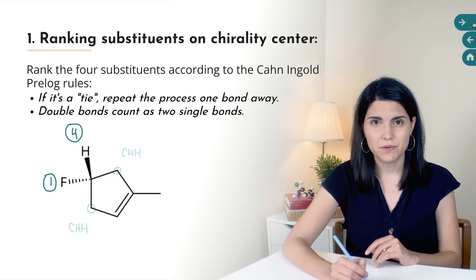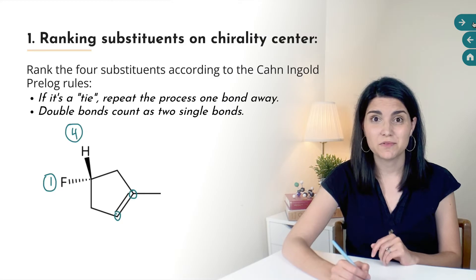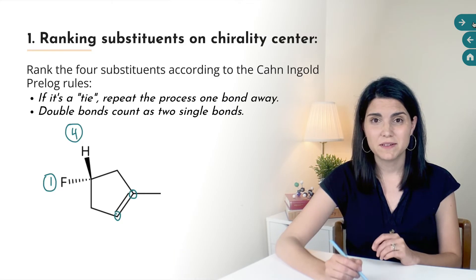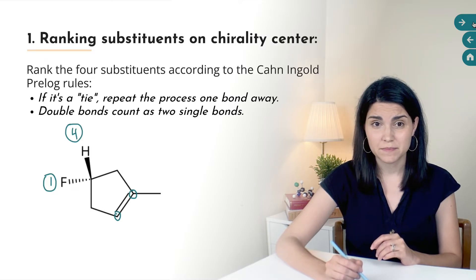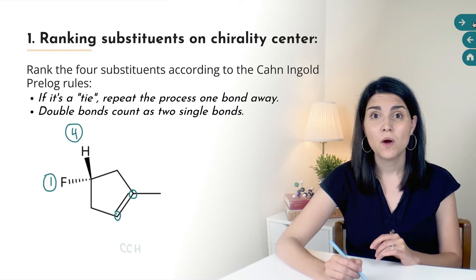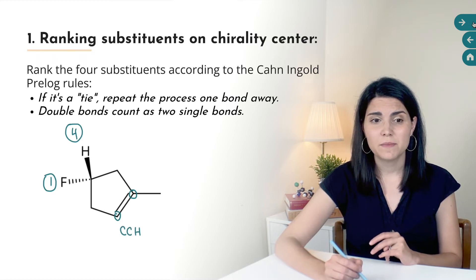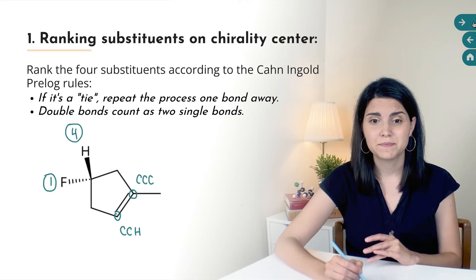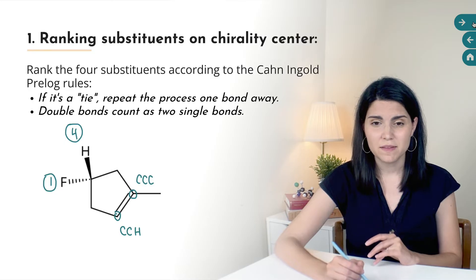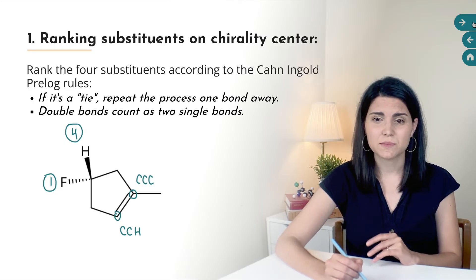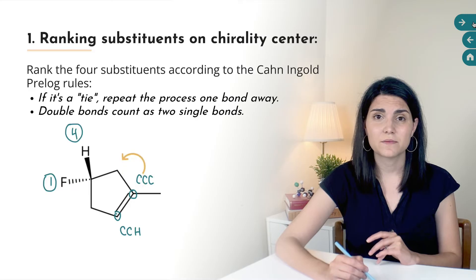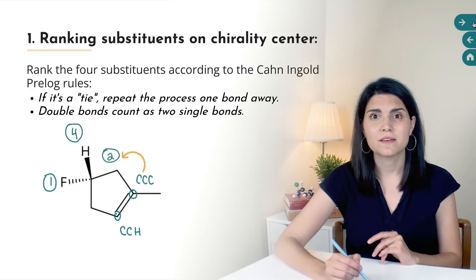Now we're comparing the next two carbons, and we encounter a double bond. When you have a double bond, you consider it as two single bonds to the same atom. So this carbon is considered bonded to C, C, and H, while the other carbon is considered bonded to C, C, and another C. The carbon connected to three carbons wins, and because it came from this side of the ring, we give it priority two and the other priority three.